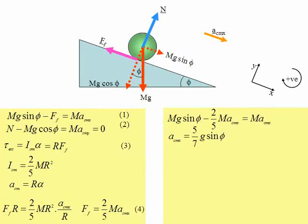We were also asked to determine what the frictional force was, f_friction. To do that, we substitute the acceleration of the center of mass x back into equation 4. That gives us the frictional force equals two-sevenths Mg sine phi. Because the ball does not slip at the instantaneous point of contact with the ground, the friction force is a static friction force — it prevents slipping and gives the ball its angular acceleration.